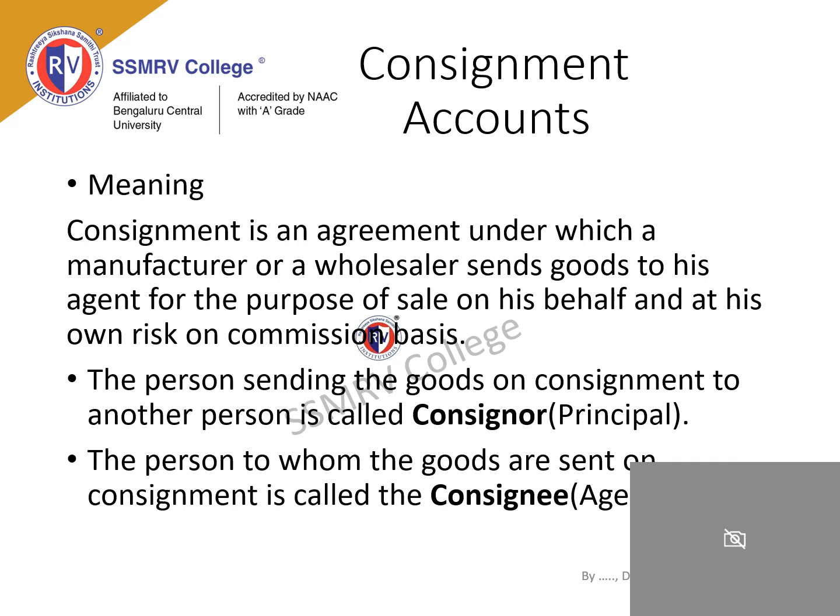For example, if Mr. X, who is in Mumbai, wants to sell his goods in Delhi, instead of going to Delhi himself, he will send the goods to Mr. Y who resides in Delhi and who is an agent. Mr. X sends the goods on consignment to Mr. Y. The person sending the goods is called the consignor — here, Mr. X. Mr. Y, who receives the goods, is referred to as the consignee or the agent.